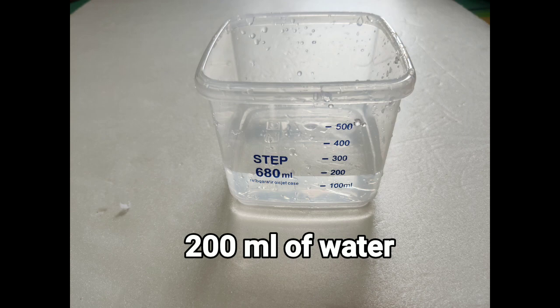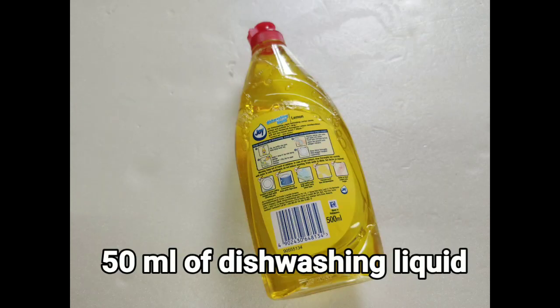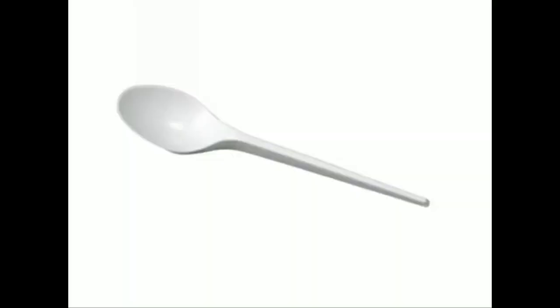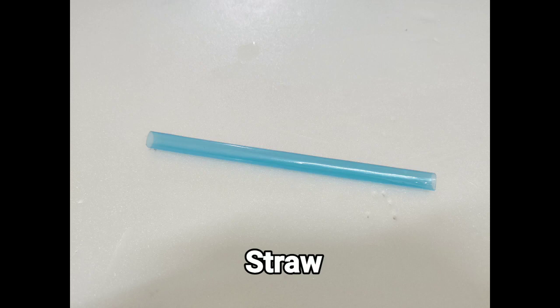Before we start our experiment, we need to know the apparatus and materials needed. We need 200 ml of water, 50 ml of dish washing liquid, glycerin, plastic spoon, and a straw to blow the soap bubbles.